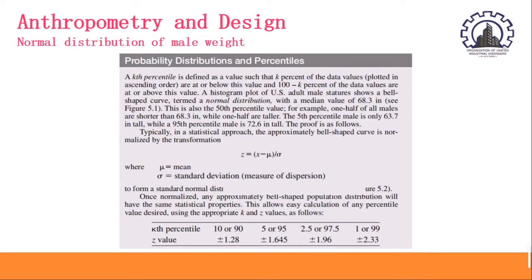Typically, in a statistical approach, the approximately bell-shaped curve is normalized by the transformation given below. Z is equal to the quantity of x minus the Greek symbol mu all over delta, where mu means the mean and delta means standard deviation, or the measure of dispersion. To form a standard normal distribution, once normalized, any approximately bell-shaped population distribution will have the same statistical properties.